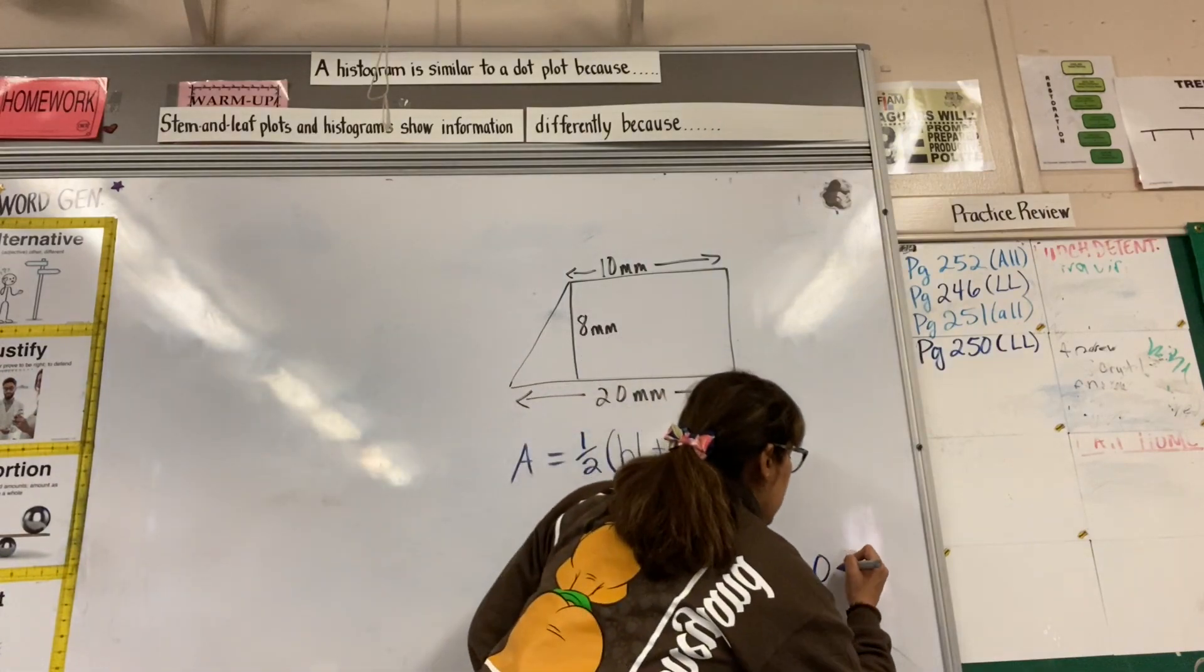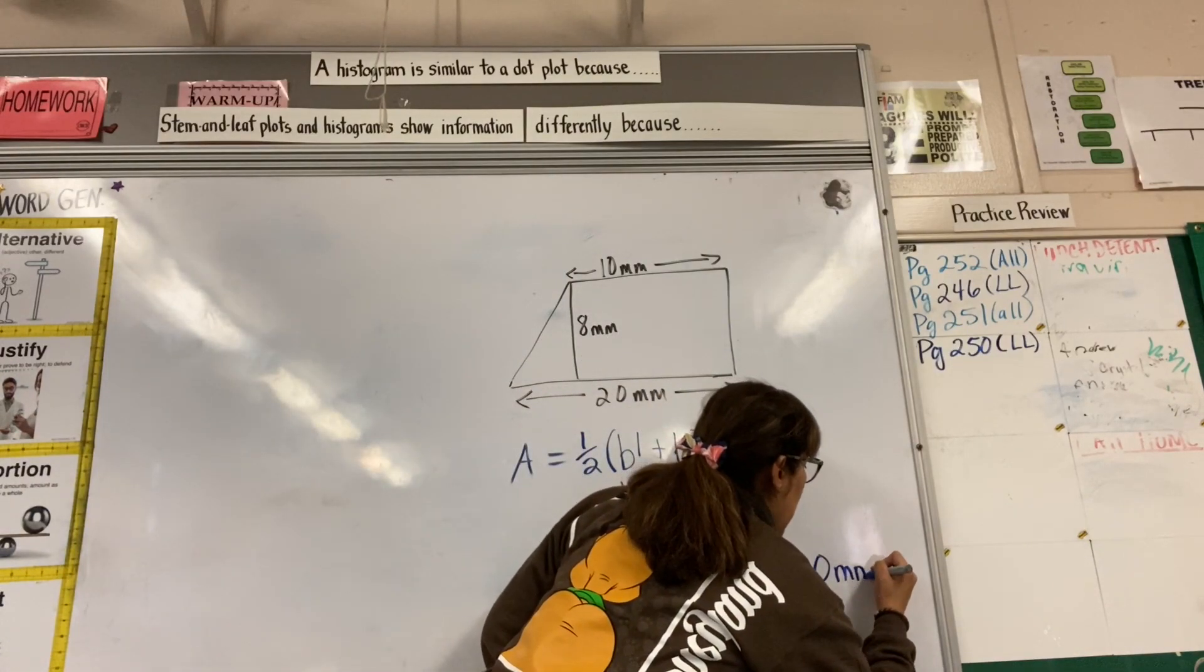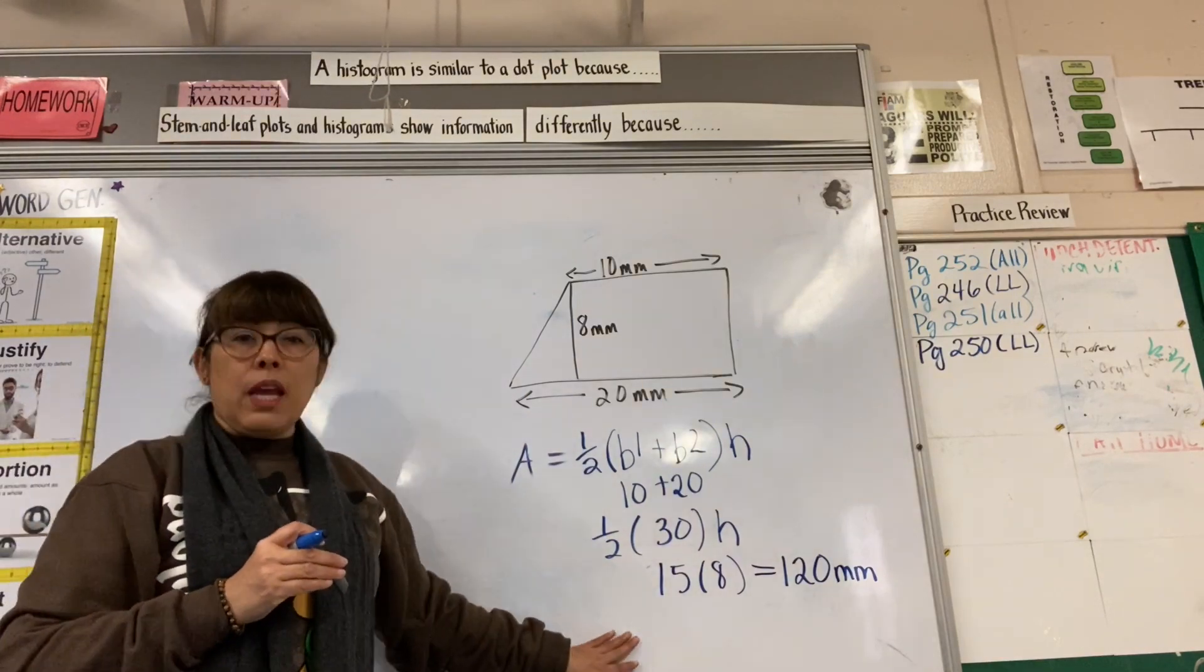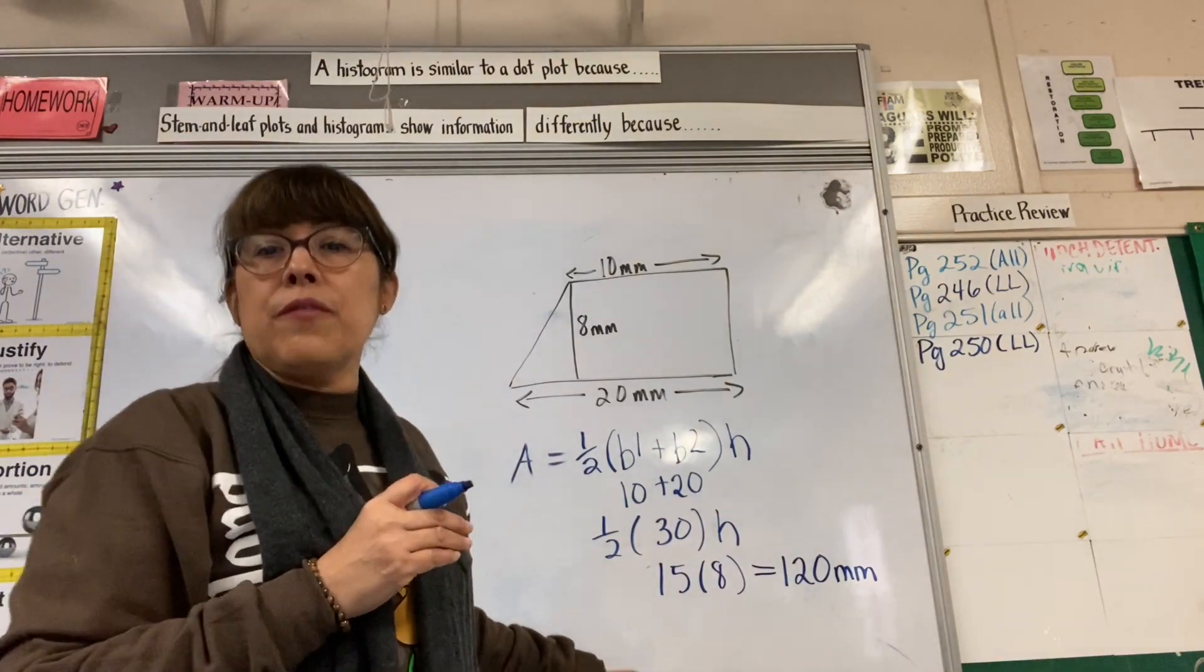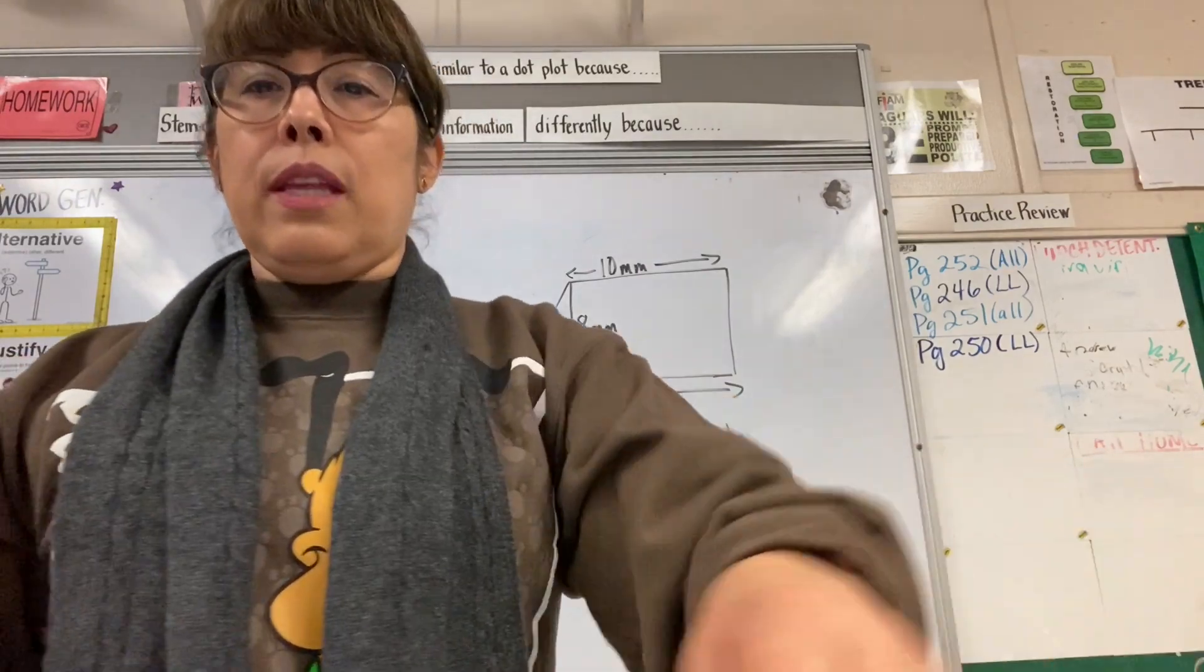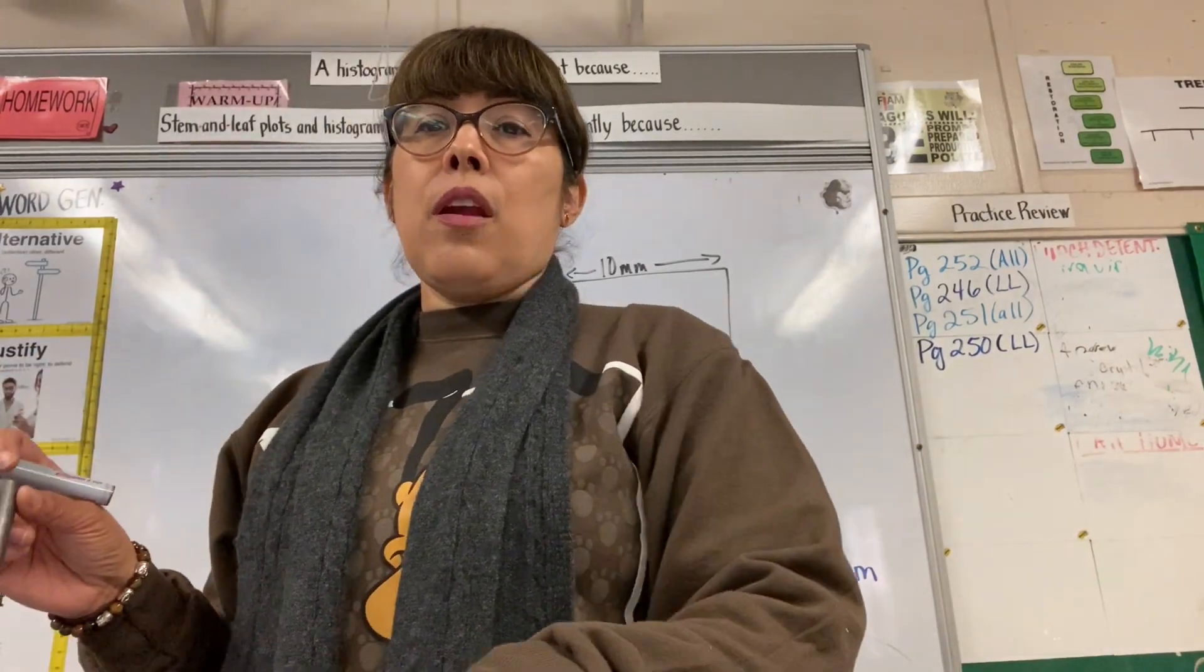Don't forget to put the two exponent for square units. Our book on page 265 will give you math notes and methods for the area of a trapezoid.